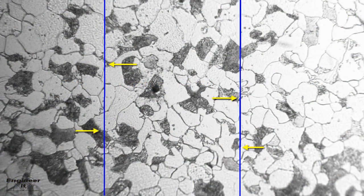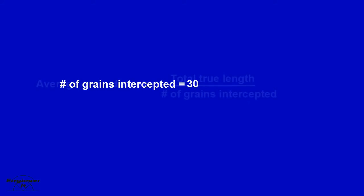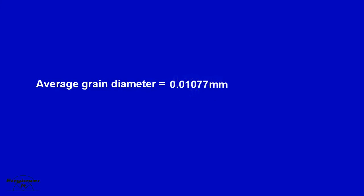Number of grains intercepted refers to the grains intercepting two vertical lines. Plug in the values to solve for the average grain diameter. This concludes number 3.